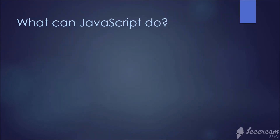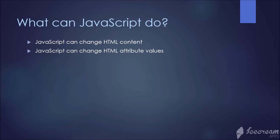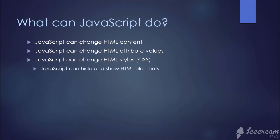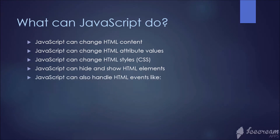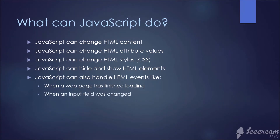What can JavaScript do? JavaScript can change HTML content, change HTML attribute values, change HTML styles (CSS), and hide and show HTML elements. JavaScript can also handle HTML events like when a page loads, when a web page has finished loading, when an input field was changed, and when a button was clicked. Those are just some of the events that can be handled by JavaScript.